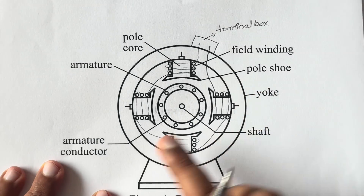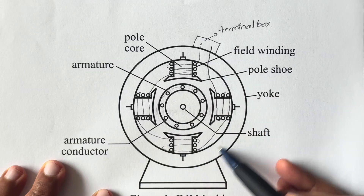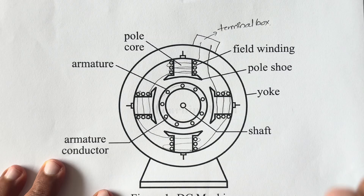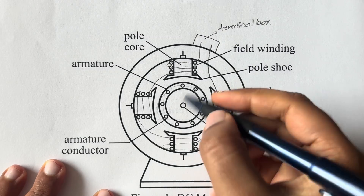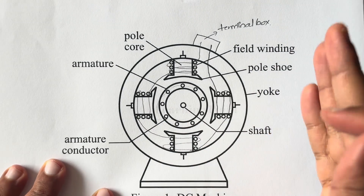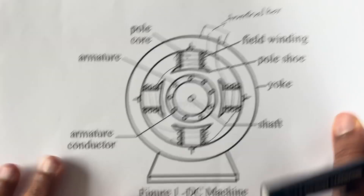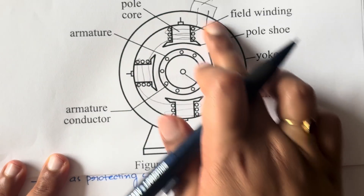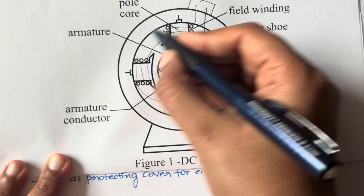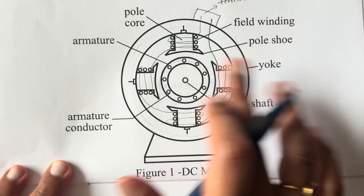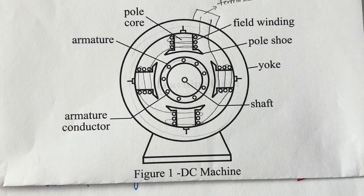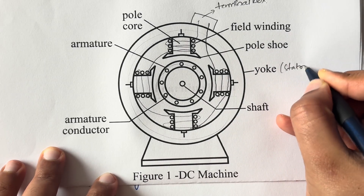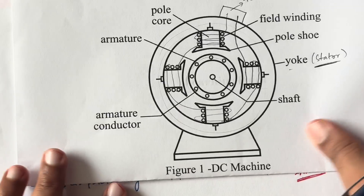This round outer thing you see in the diagram is the yoke. It is usually made up of cast iron or cast steel, which is very hard, so that the internal parts of the machine are protected. It also helps provide a path for the flux — the magnetic field passes through the yoke. The outermost portion is the yoke, and it is a stationary part.